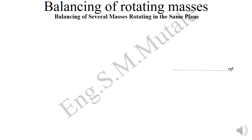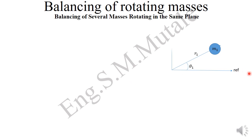This is a scenario where you have a reference phasor, from which you have a mass located at radius r1 with a given value and an angle from the reference phasor — calling the reference phasor here as 'ref'. You can have another mass, mass number two, situated at radius r2.